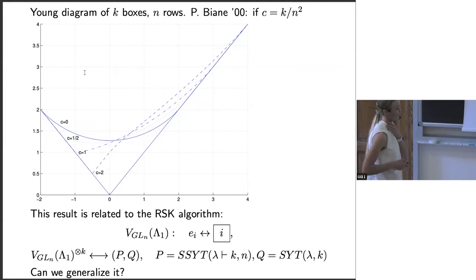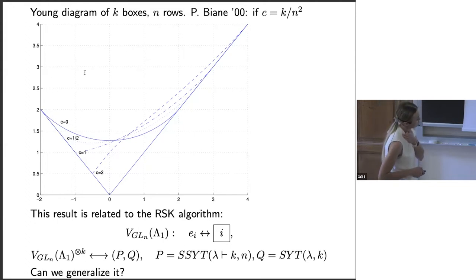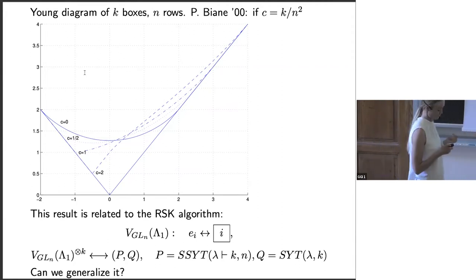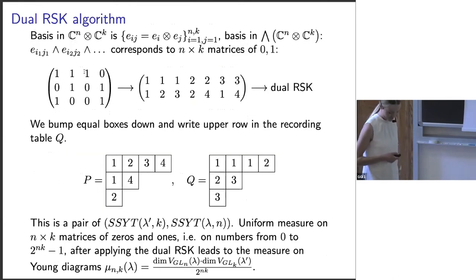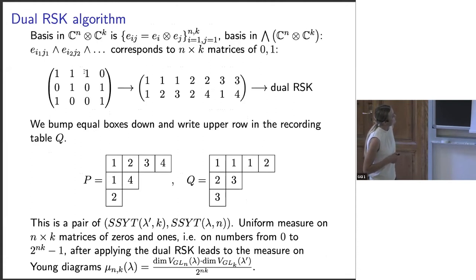One interesting fact: if k/s² is constant, the limit shape depends on the ratio — that is also an interesting phenomenon. This result is related to the RSK algorithm: we make a correspondence between vectors of the standard representation and boxes, and then for the k-th tensor power, using RSK it corresponds to a pair of semistandard Young tableaux with no more than k rows.